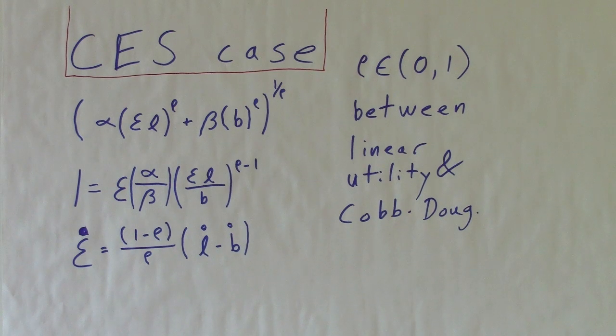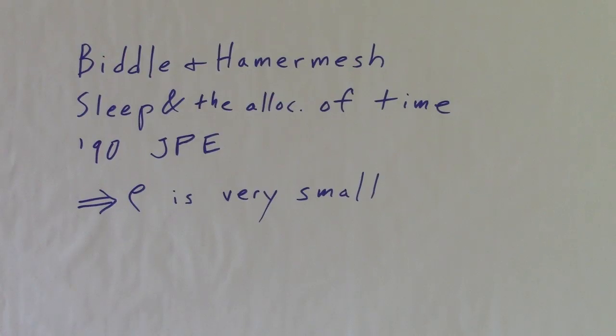Economists need a better understanding of the body clock, for sure. The results in Biddle and Hammermesh imply that rho is very small. Scary small, actually.